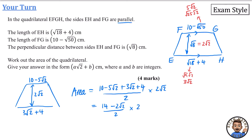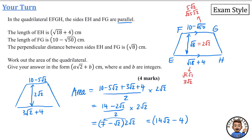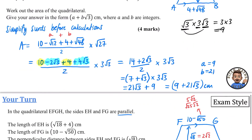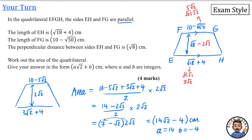Dividing by 2: 14 ÷ 2 = 7 and 2√2 ÷ 2 = √2, giving (7 − √2) × 2√2. Expanding: 2√2 × 7 = 14√2, and 2√2 × (−√2) = −2 × 2 = −4. So the area = 14√2 − 4 cm², meaning a = 14 and b = −4. I hope this is useful — I wanted to blend surds and trapeziums together. There's more in this playlist, so make sure you're subscribed.